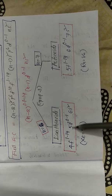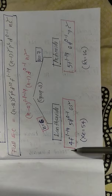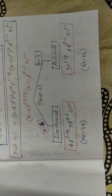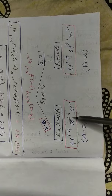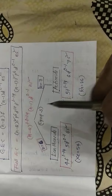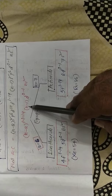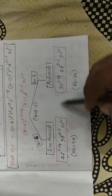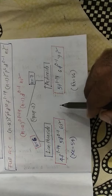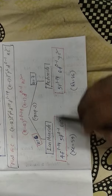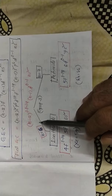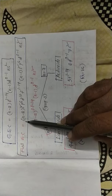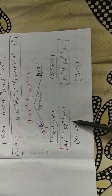For actinides, located in period 7, n = 7. Substituting: n−2 = 5, giving 5f¹⁻¹⁴; n−1 = 6, giving 6d⁰⁻¹; last shell is 7s². Before this configuration, radon is the noble gas core. So for actinides: [Rn] 5f¹⁻¹⁴ 6d⁰⁻¹ 7s². In competitive exams, both the lanthanide series and actinide series configurations are commonly asked.